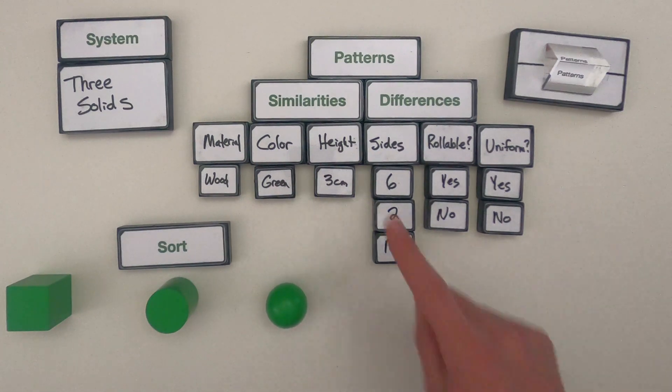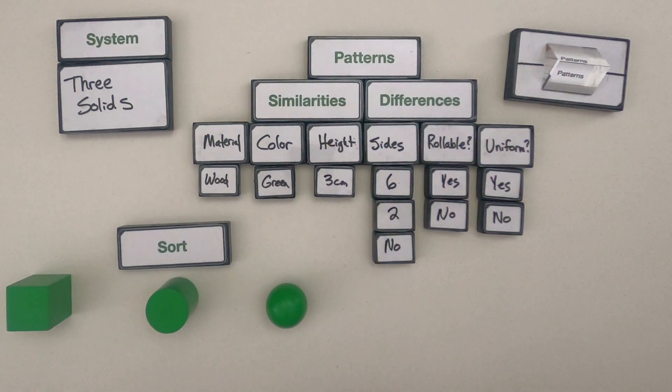And so the power of similarities and differences is it allows us to more carefully sort, classify, and analyze objects. So what I want to do is clean all this off and then I'm going to give you an additional system. And what I'd like you to do is look for similarities and differences and how we could use those to sort the material.